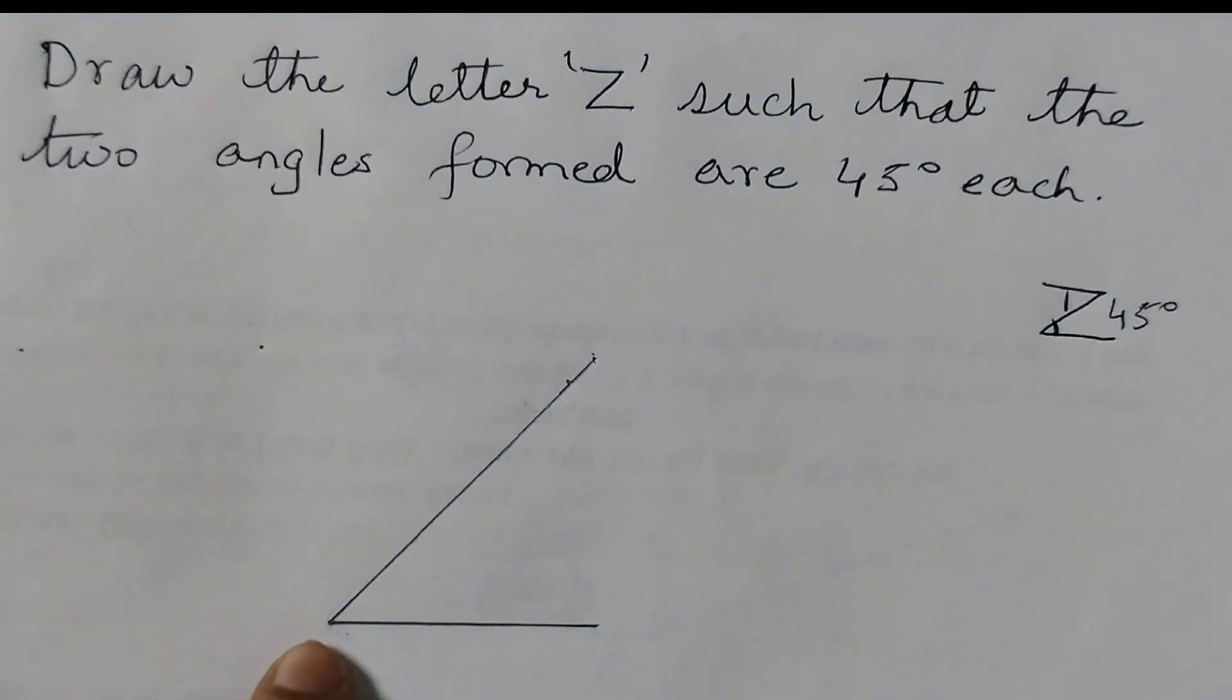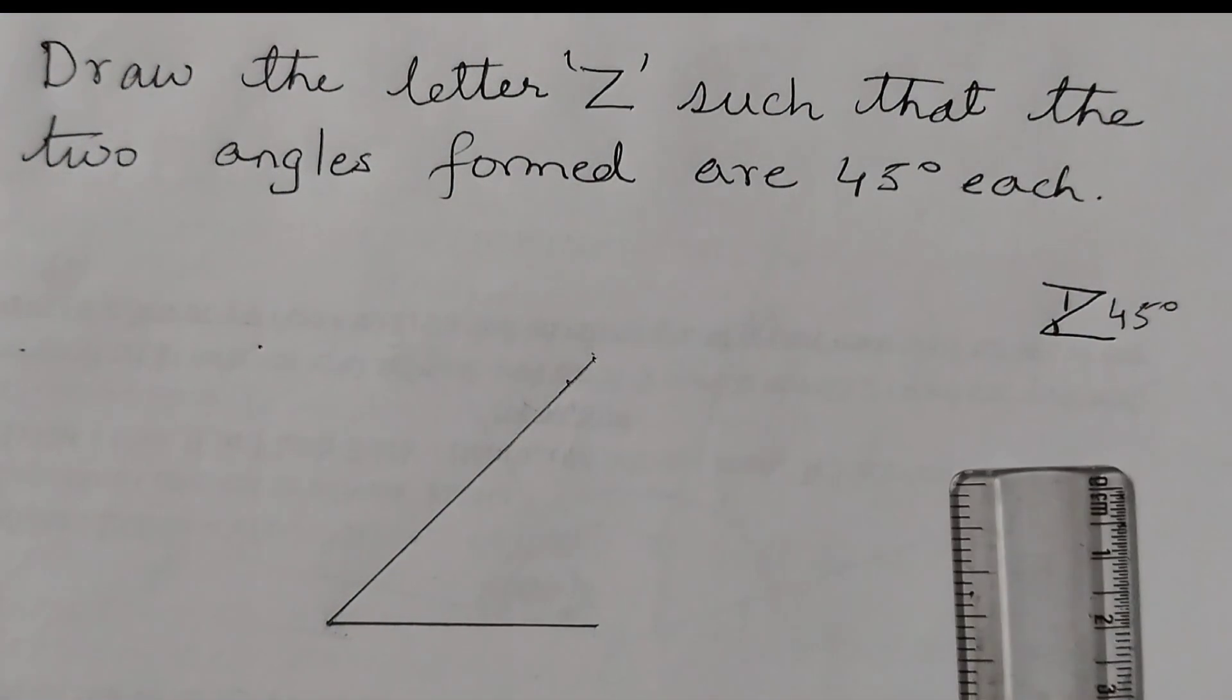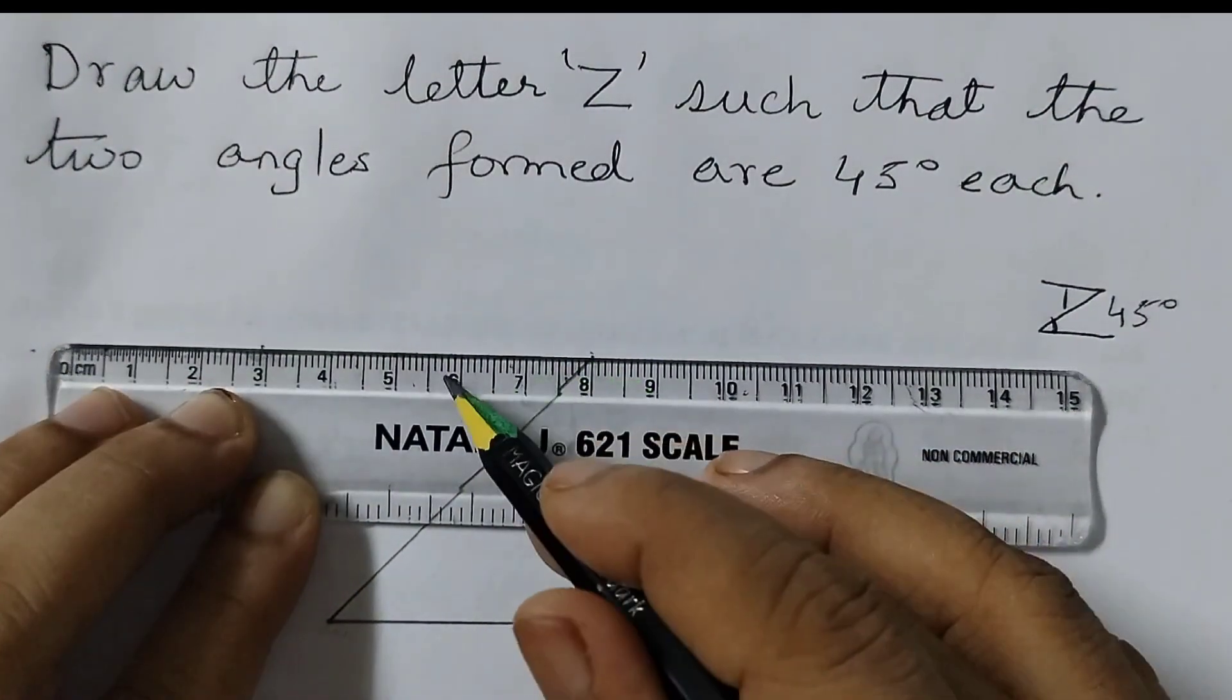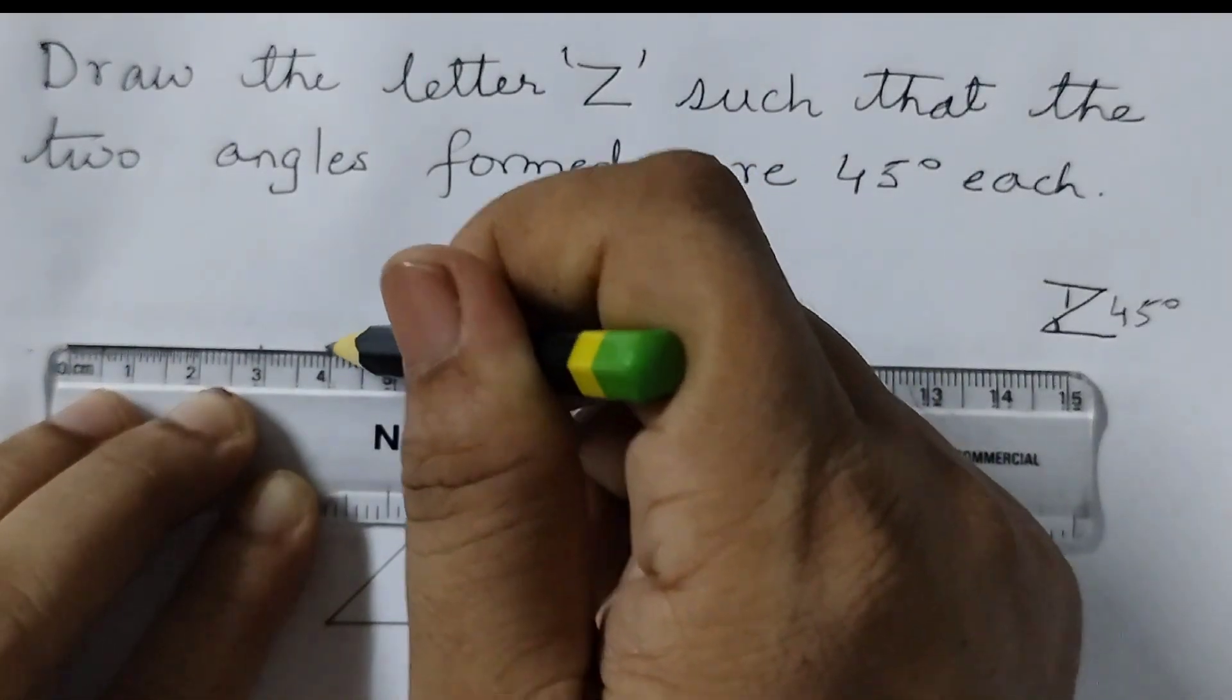Now we need 4 cm. Because I have taken this as 4 cm, here also I am going to take 4 cm. So this is 8 cm. So 1, 2, 3, 4. So till 4 I will draw.